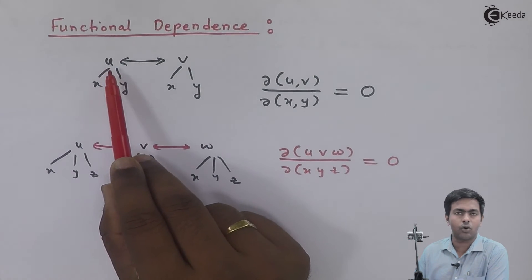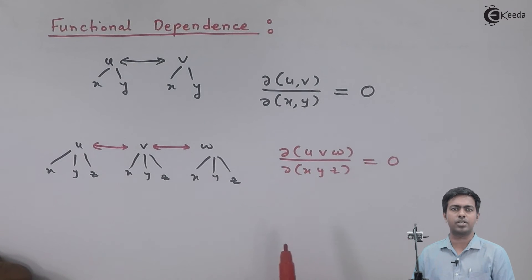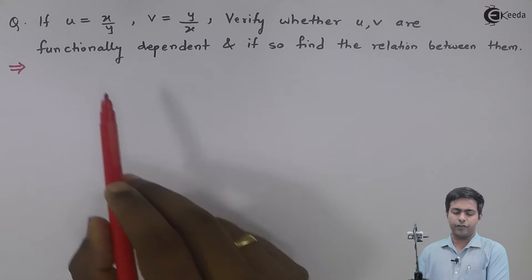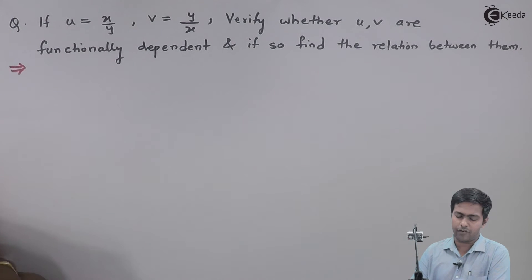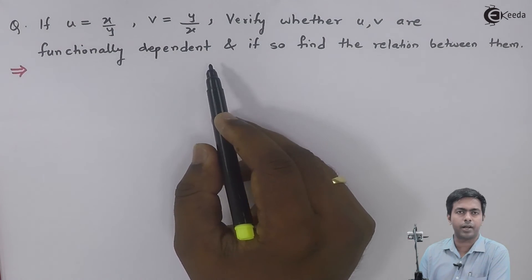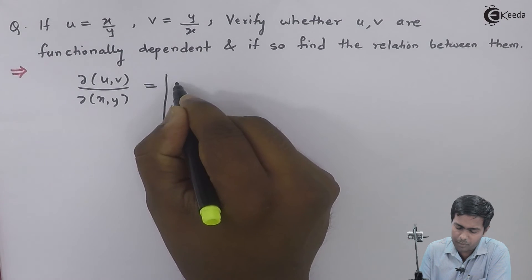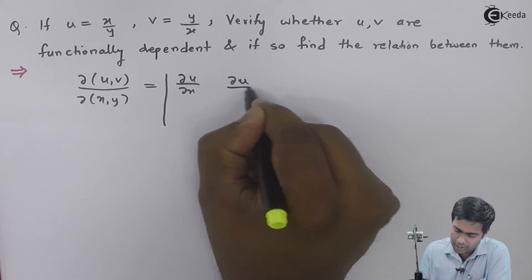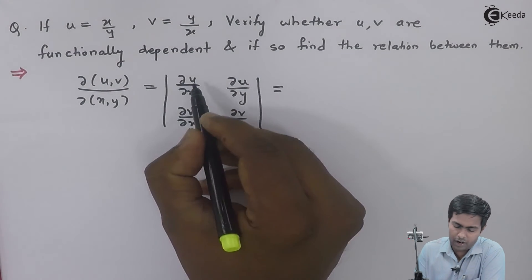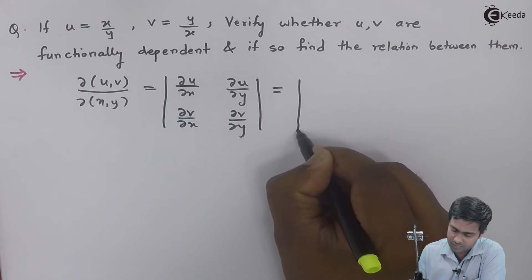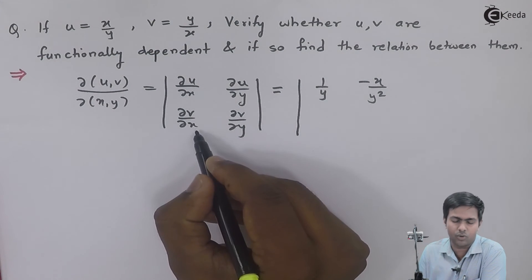That means one variable is a function of another — u is a function of v, or v is a function of u. Let's understand this with an example. If u = x/y and v = y/x, verify whether u and v are functionally dependent. To check, we find the Jacobian of u, v with respect to x, y, given by the matrix of partial derivatives: ∂u/∂x, ∂u/∂y, ∂v/∂x, ∂v/∂y. We get ∂u/∂x = 1/y, ∂u/∂y = −x/y², and ∂v/∂x as the next entry.